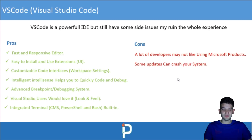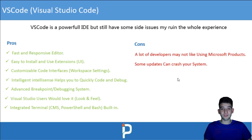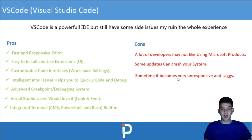Some updates can crash your system — for example, a July update could update VS Code to the latest version and suddenly it crashes. Your VS Code version breaks and you can't code anymore. You can go back to the last version, but it's still a hassle.